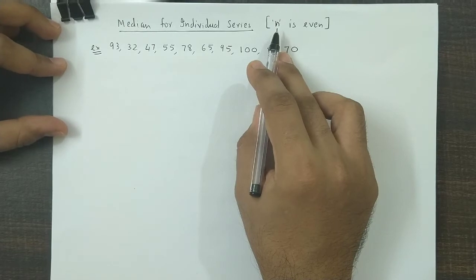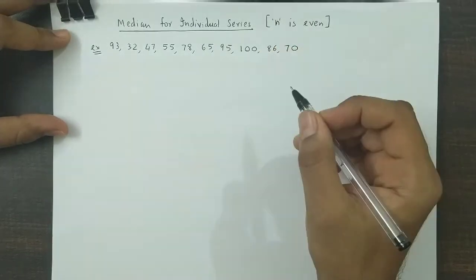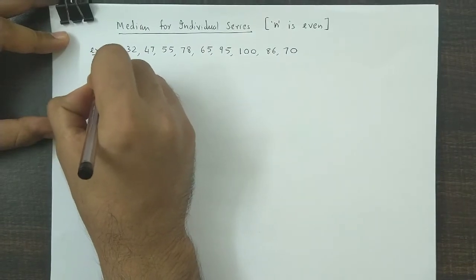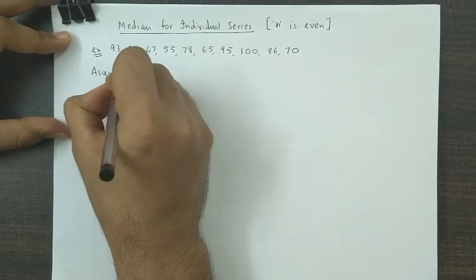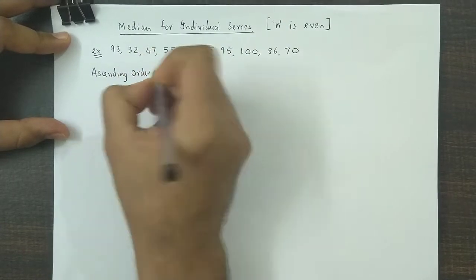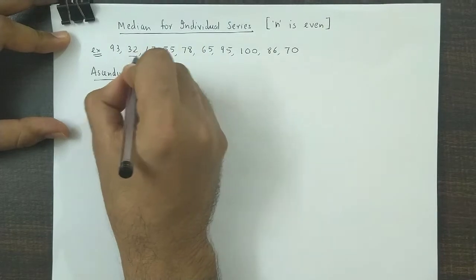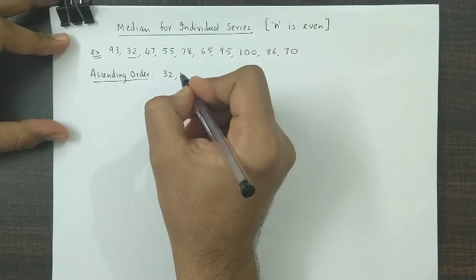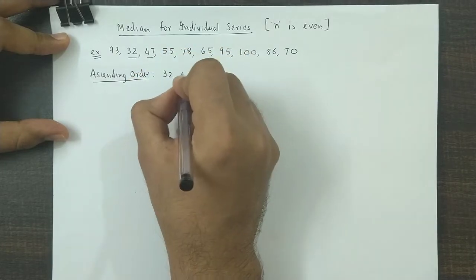Let us go by the ascending order, so you first arrange the data in ascending order. Now the least value here is 32, so the first observation would be 32, next would be 47.